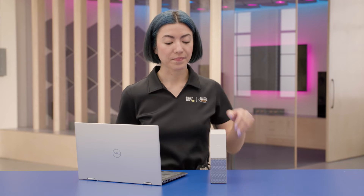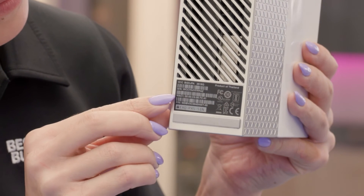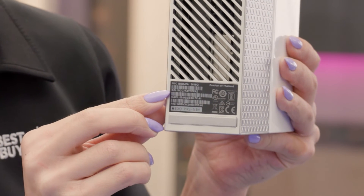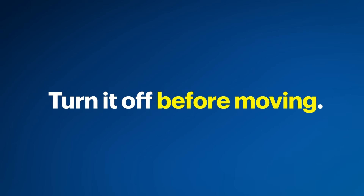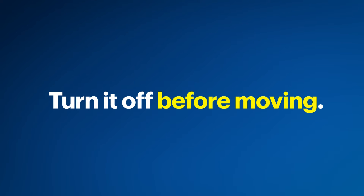When using the My Cloud Home as a backup destination, we first need to get the last six characters of the serial number. This information is located on the bottom of the NAS and should be written down or captured with your phone. A quick tip: before moving the NAS, you'll want to make sure it is not powered on. Just make sure the power is back up when you're done.